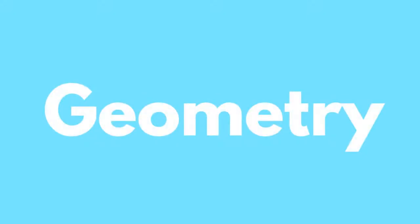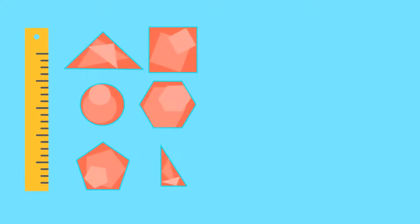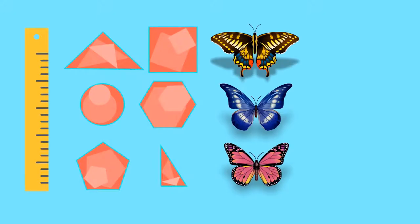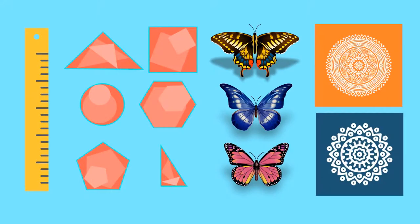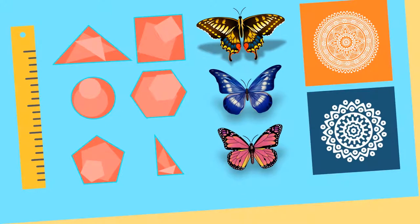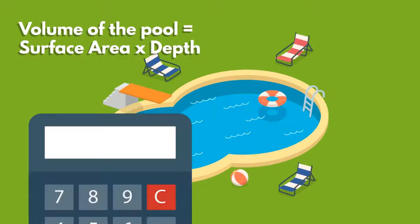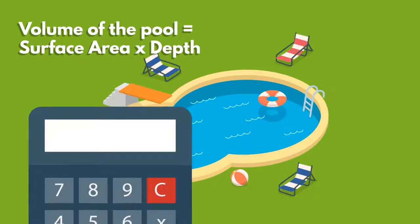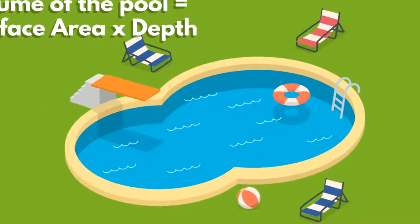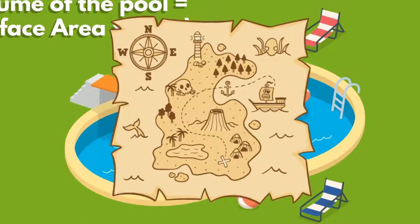Geometry is the area of maths that applies to shape and space. It involves measurements, shapes, symmetry, patterns and angles. We can use geometry to calculate anything from the size of a room to how much water is in a swimming pool or which direction to take on a map.